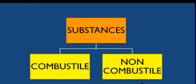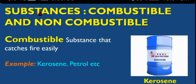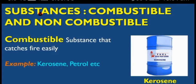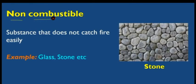Substances are of two types: combustible substance and non-combustible substance. A combustible substance is one that catches fire easily. Examples include kerosene and petrol. When a flame is placed near kerosene, it burns — so any substance that catches fire easily is called a combustible substance.